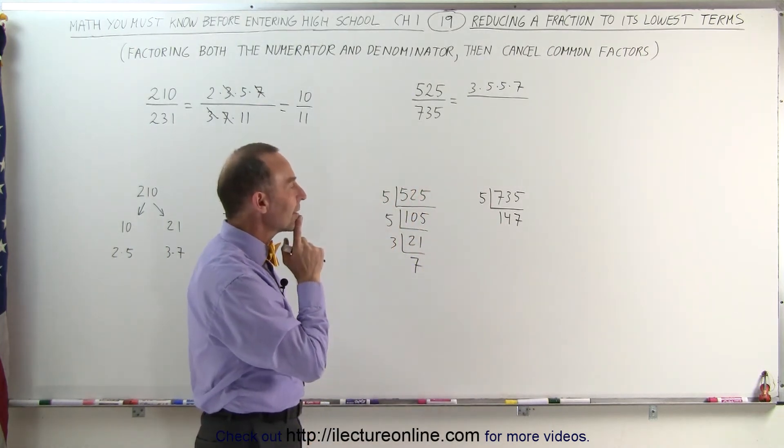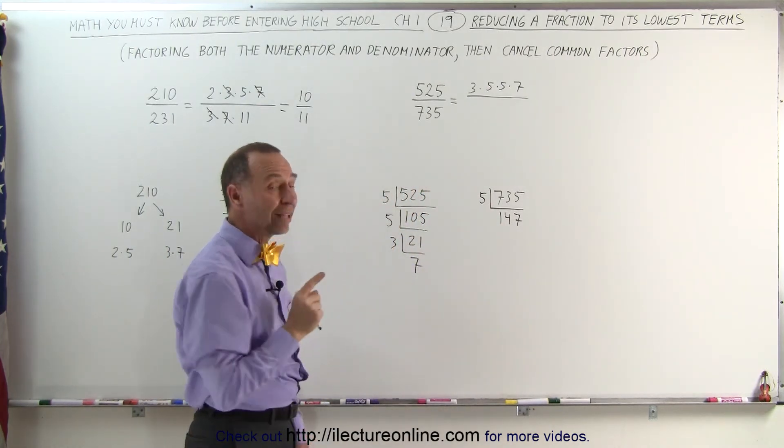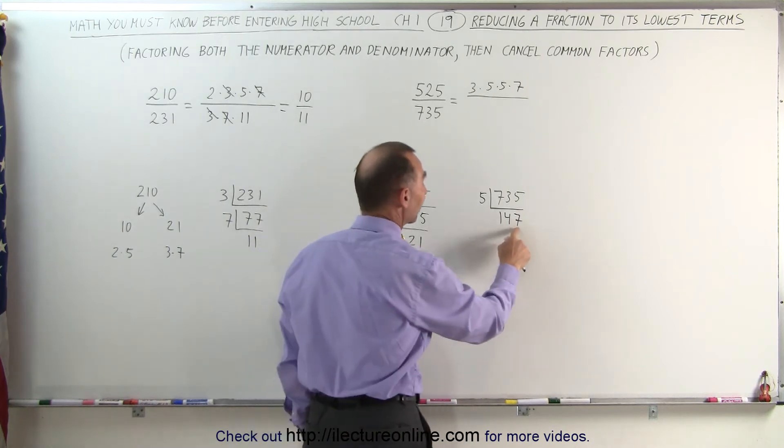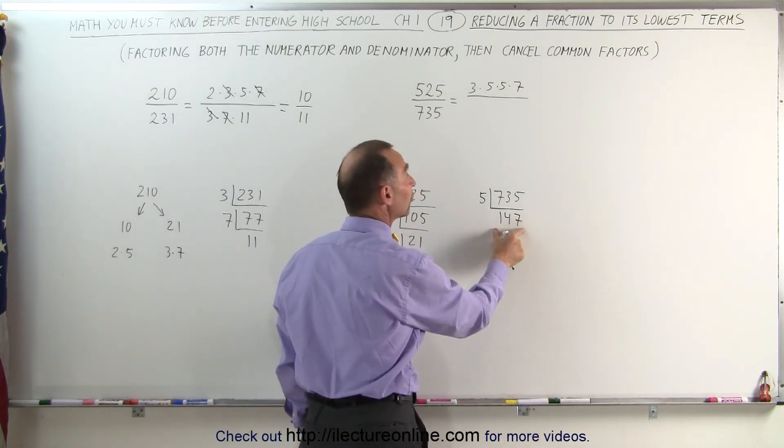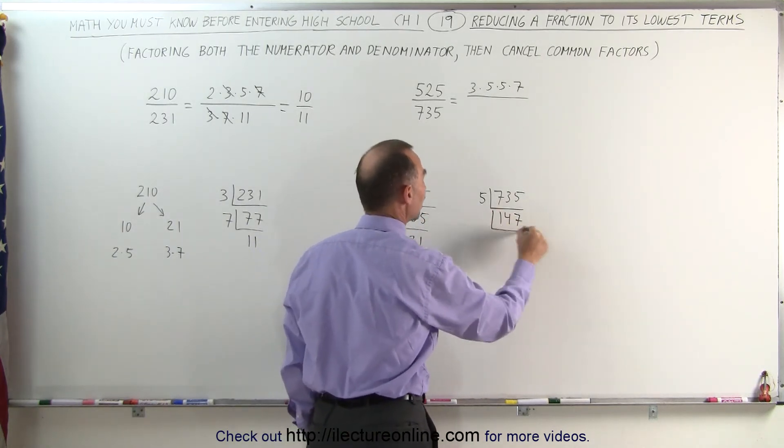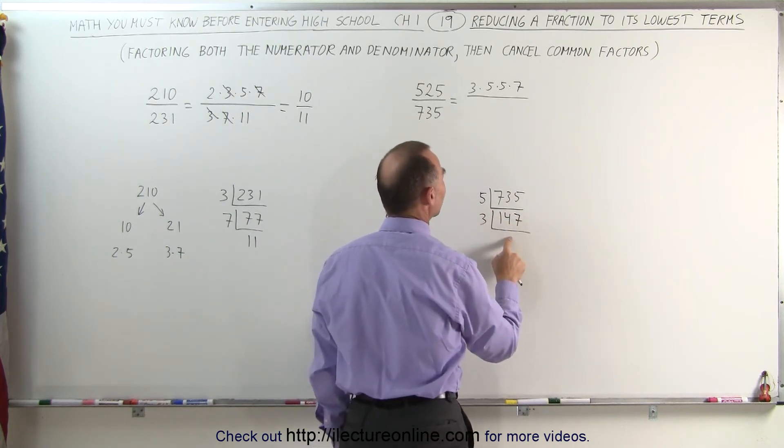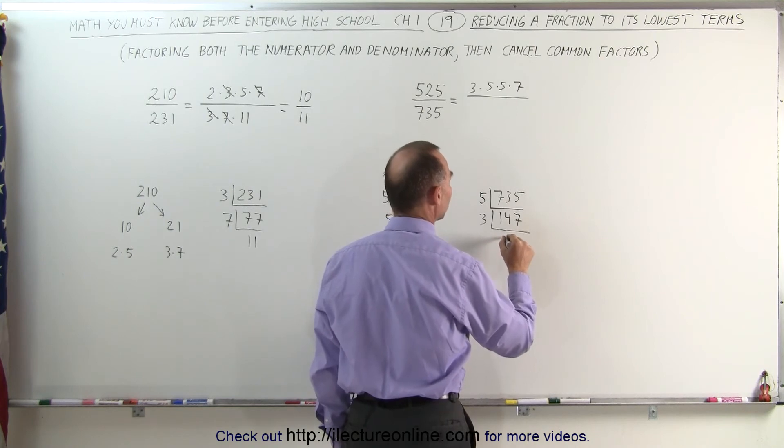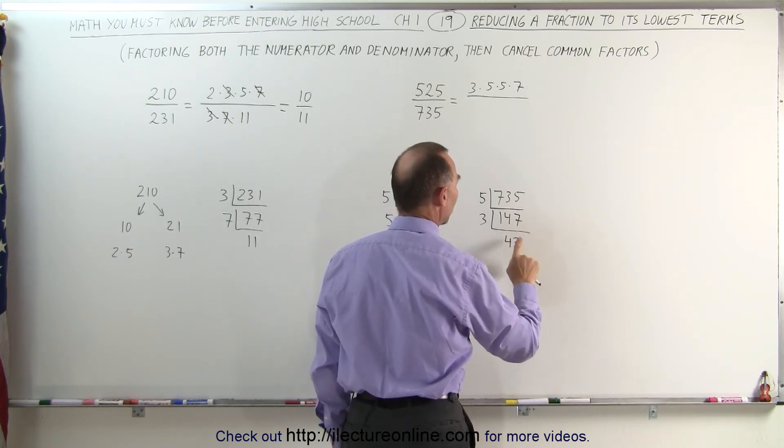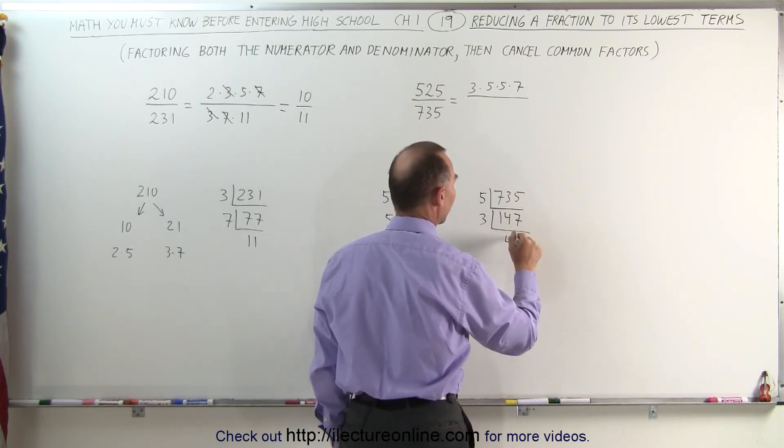Now let's see here, 147. If I add those digits together, I get 12, which is a multiple of 3, which means this can be divided by 3. 3 goes into 120 40 times, 27 9 times, that's 49.